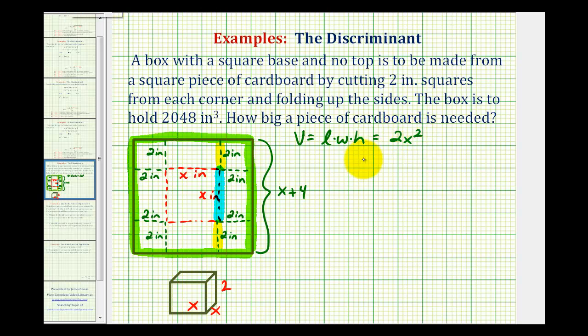So for this problem, 2x squared must equal the volume of 2,048. So now we'll solve this equation for x, and once we find x, we can determine the dimensions of the original piece of cardboard.